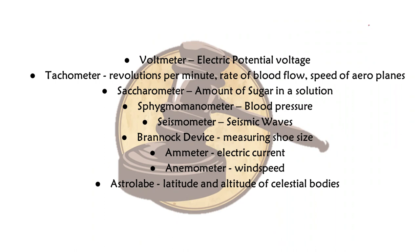Voltmeter measures electric potential voltage. Tachometer measures revolutions per minute, rate of blood flow and speed of airplanes. Saccharometer measures the amount of sugar in a solution. Sphygmomanometer measures blood pressure. Seismometer measures seismic waves. Brannock device measures shoe size — that thing in shoe stores where you put your foot on a scale-like device to measure your size.